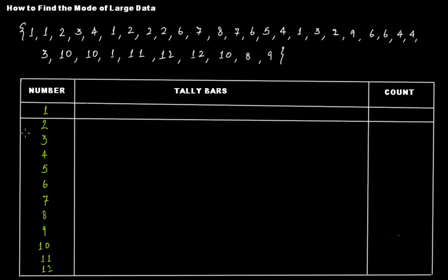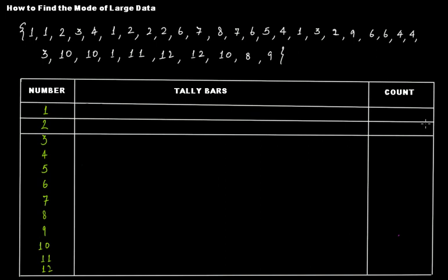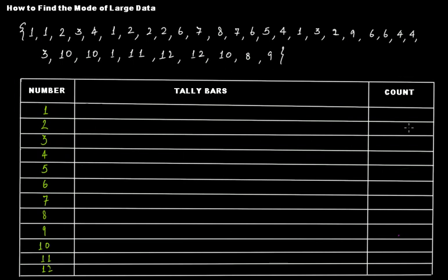So I'm going to pause this video to draw the lines so there's no confusion. We have drawn all the lines to separate these numbers. Now let's begin counting using tally marks. For value one, we have one occurrence, then a second, then a third, then a fourth, then a fifth — five times.